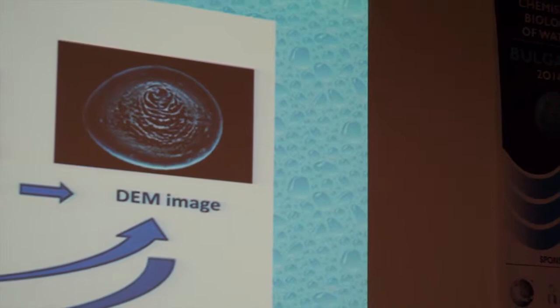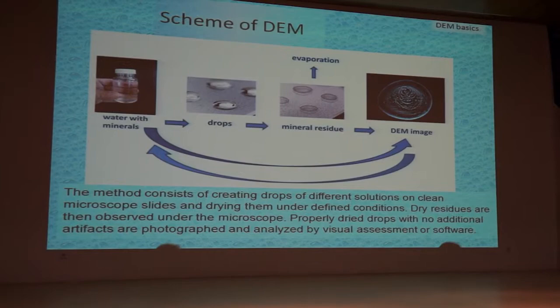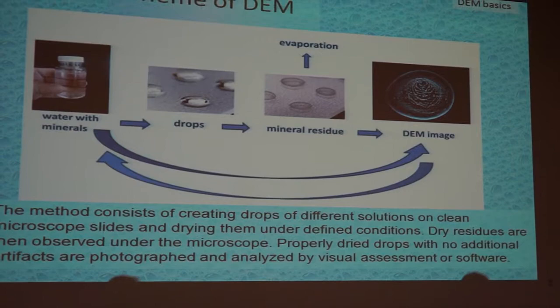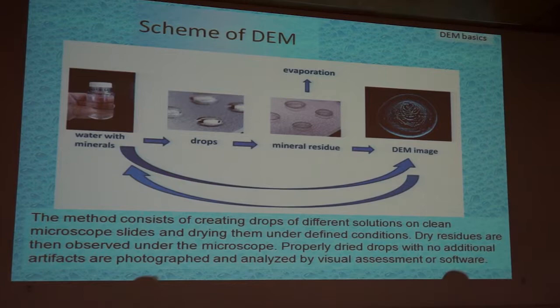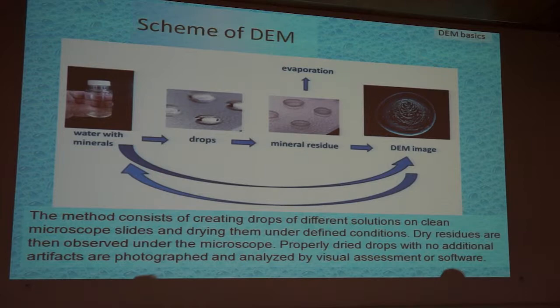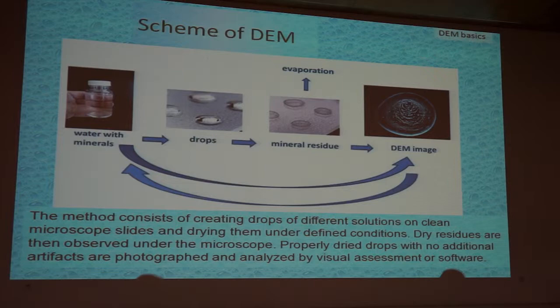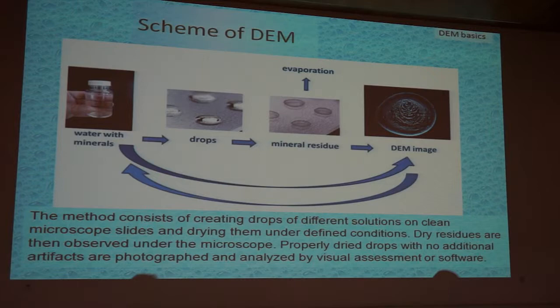The scheme of the DEM method: first, you must have a certain water or liquid solution sample. Then you drip the drops onto a microscopic slide according to certain procedures. You put the slides in a safe place so the water can evaporate, and you get water remnants or residues — these are mineral residues. You put these under the microscope and take images. These images can then be analyzed either by eye and mind or via rigorous algorithms or computer analysis.